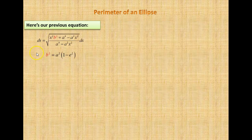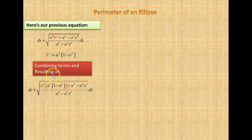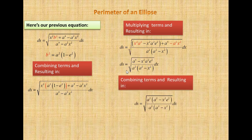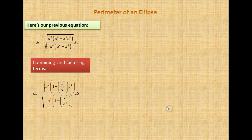We plug b squared into our arc length equation. Combining terms, after some multiplication we get x squared a squared minus a squared x squared, which are the same and cancel out. After cancelling, we factor out another a squared, and those a squareds cancel as well, leaving our simplified arc length expression.